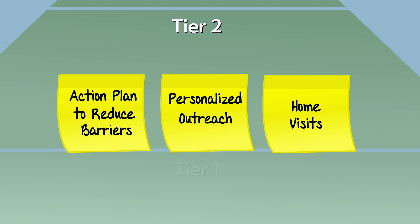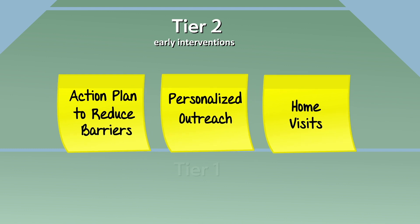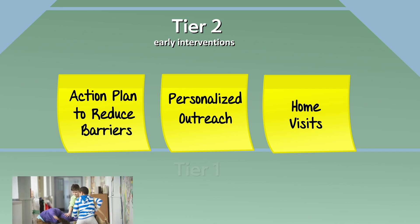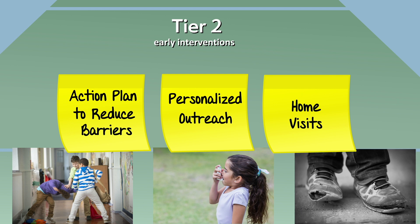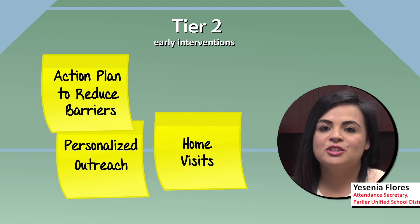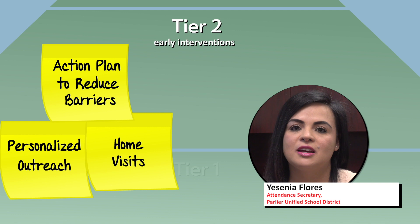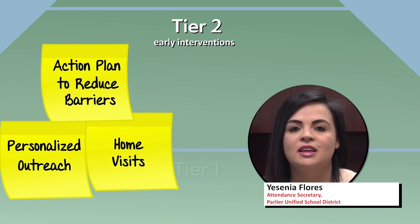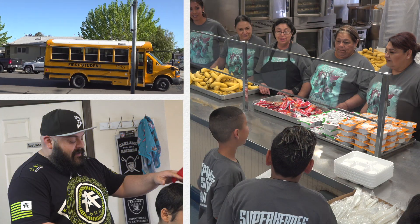For those students flagged by data for starting to miss too much school, Tier 2 strategies are early interventions that address the individual barriers that get in the way of attending school every day. There are many reasons why students are chronically absent, such as bullying, unmet health conditions, and lack of basic needs including food, clothes, and stable housing. When kids don't come to school, we try to figure out what's going on in their lives. We do home visits and find out that sometimes kids are missing school not because they want to, but because they have problems in their life, and we try to help them with transportation, clothes, food, and even haircuts.